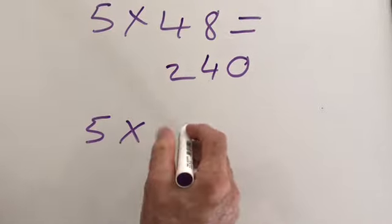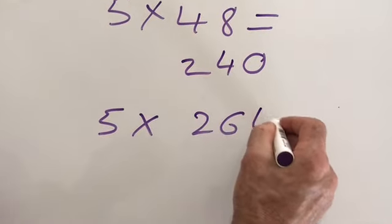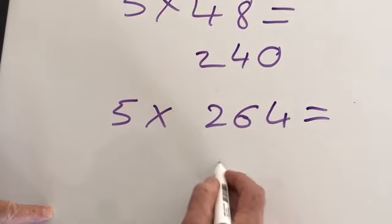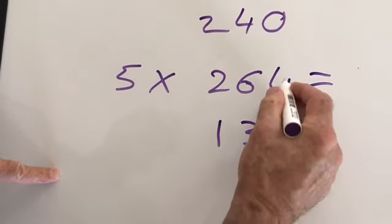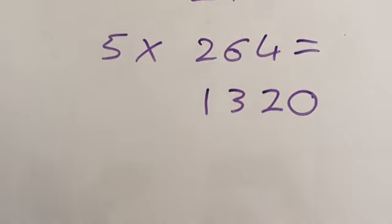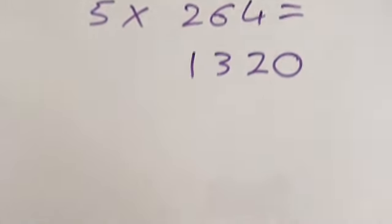Five times 264. Impossible, you say. Easy. Half of two is one. Half of six is three. Half of four is two. Put a zero on the end. We have our answer. These Russians are clever fellows.